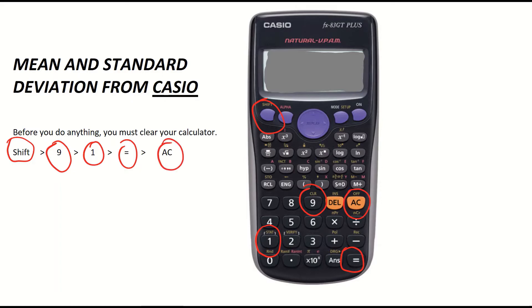So it's shift 9 and then follow the online instructions. So that's clearing your calculator before we go off and find the mean and standard deviation.